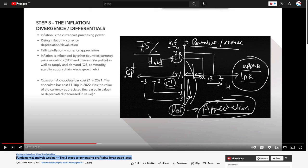When inflation goes above the 2% target, central banks have to hike rates. If it goes below their 2% inflation target, they typically have to cut. Understanding when they should hold is important — otherwise you're really at a disadvantage when it comes to understanding what pairs and currencies to trade.